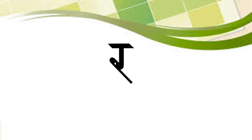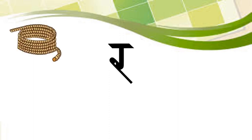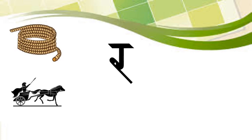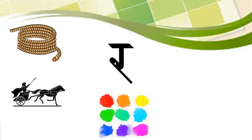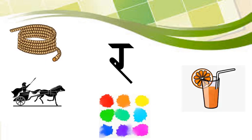Which Vyanjan is this? R. Children, please repeat after me. Vyanjan R. R say Rasi. What does Rasi mean? Rasi means Rok. Rasi Rath — Rath means Chariot. Rasi Rung — Rung means Color. Rasi Ras — Ras means Fruit Juice.